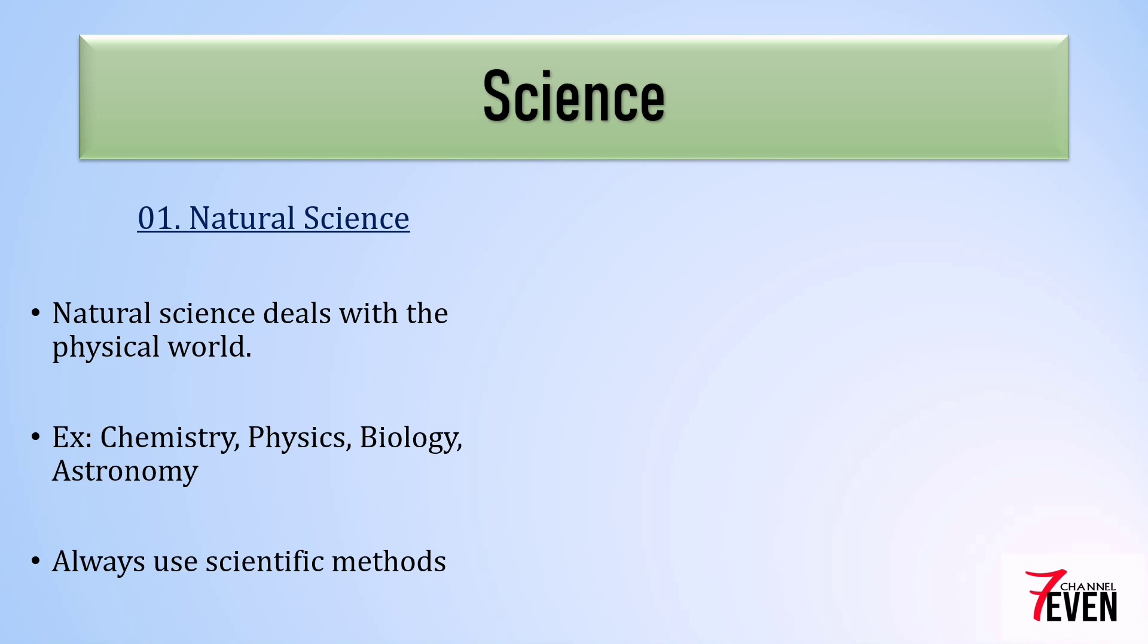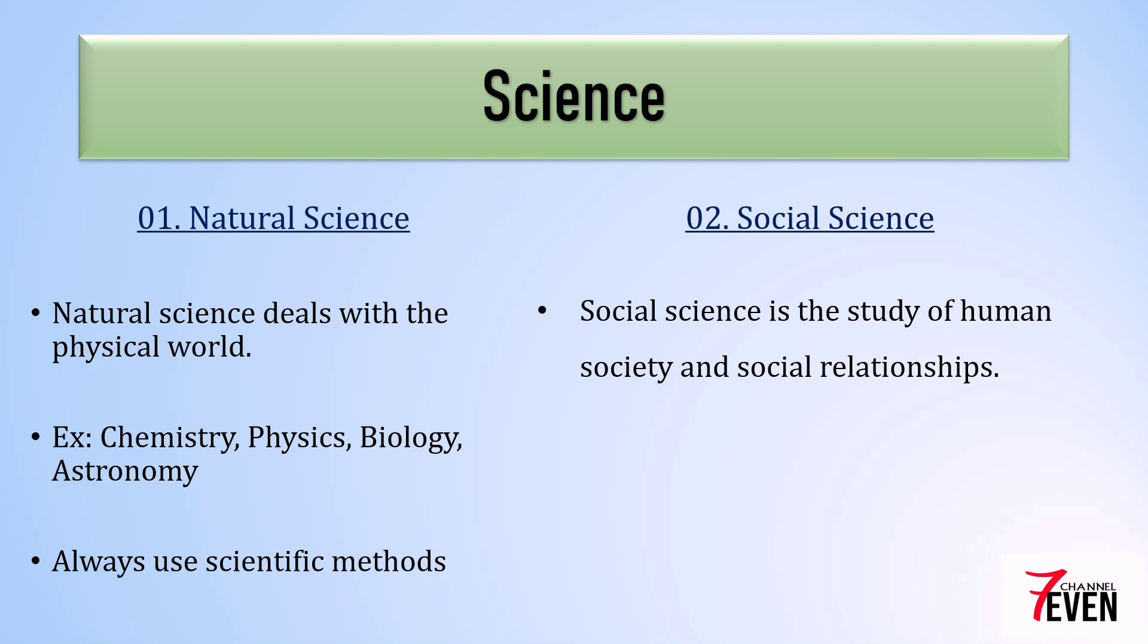The other one is social science. Social science is the study of human society and social relationships or human behaviors. Examples include political science, law, history, sociology, and so on. Social science uses scientific methods as well as other methods.